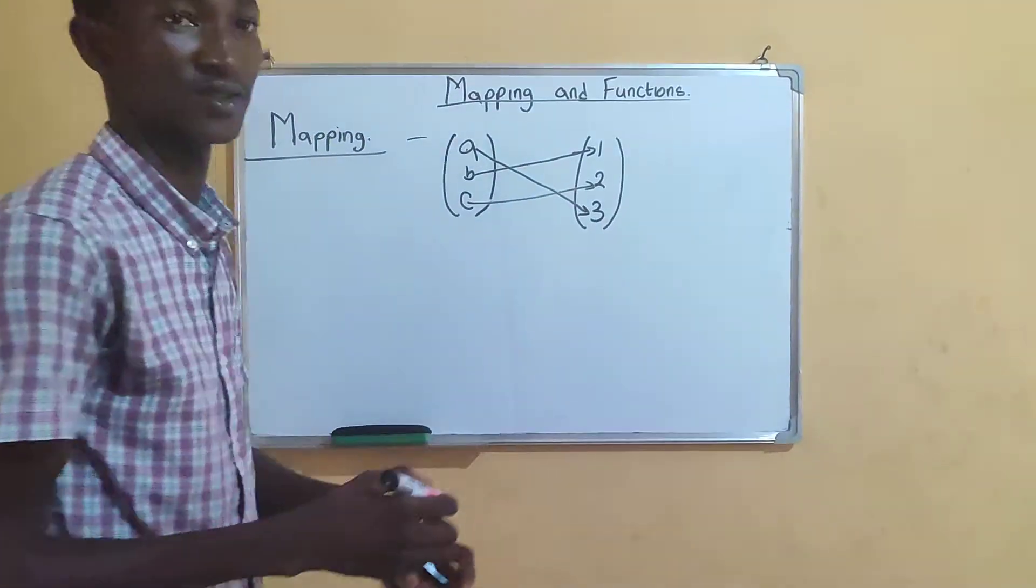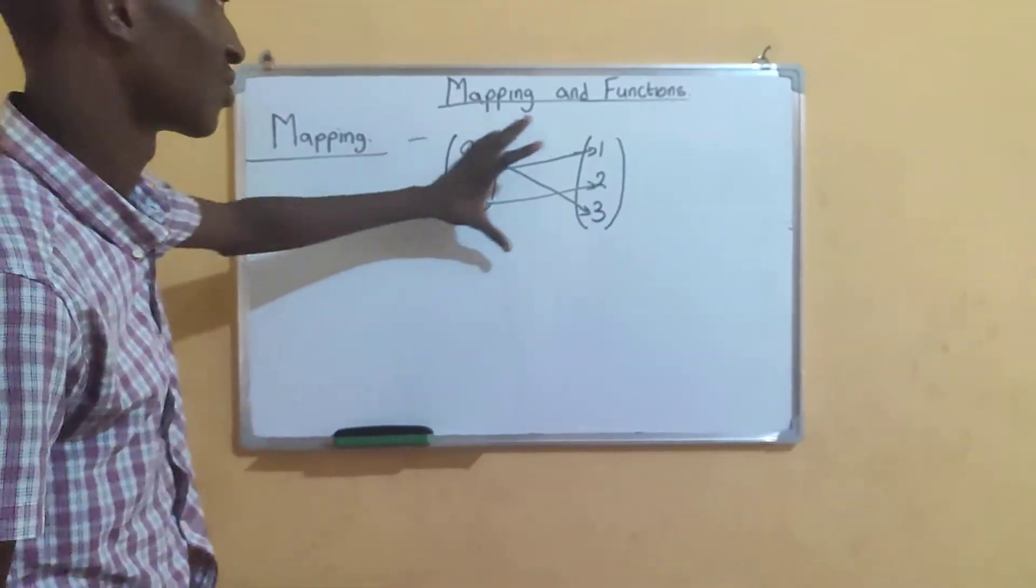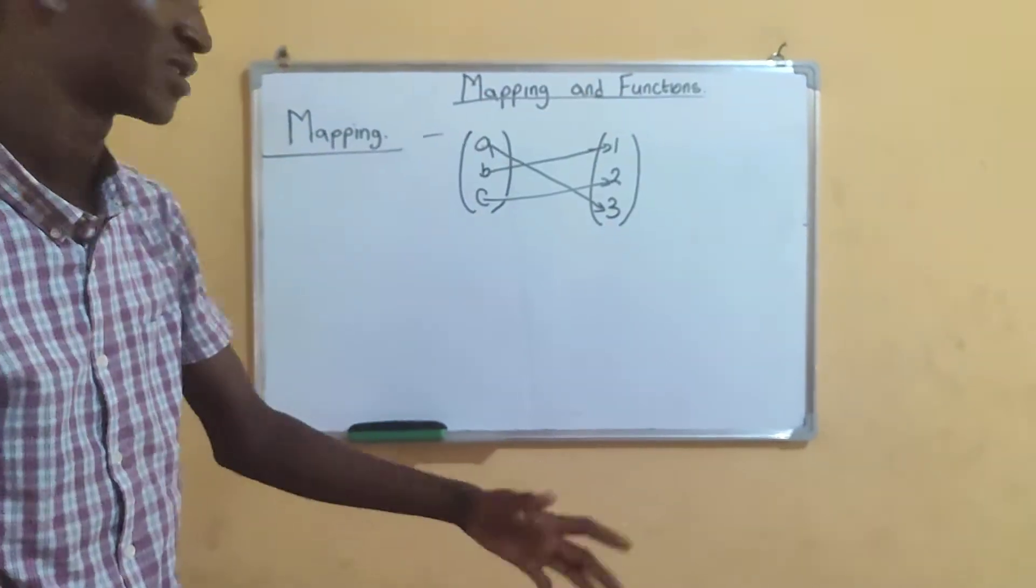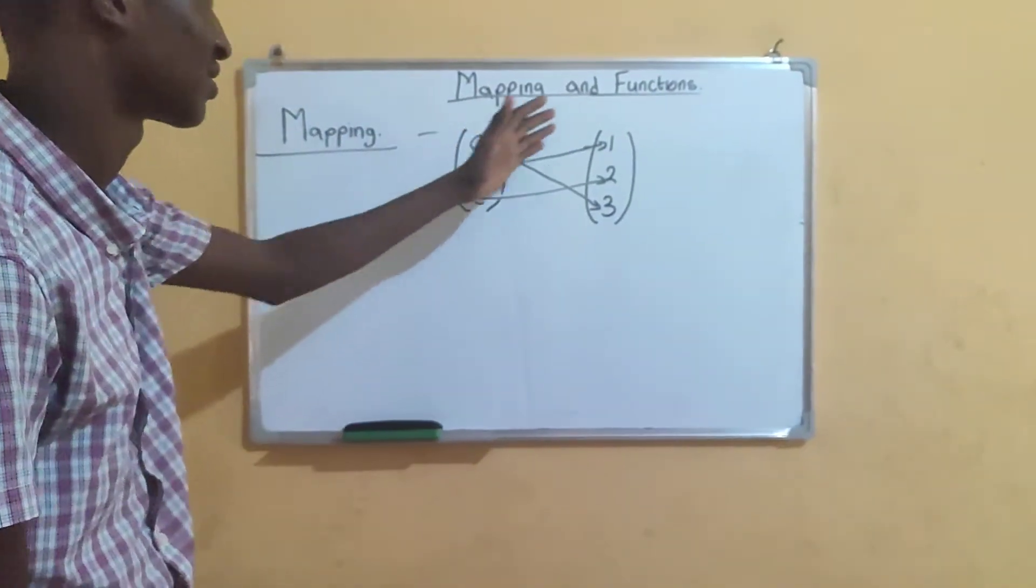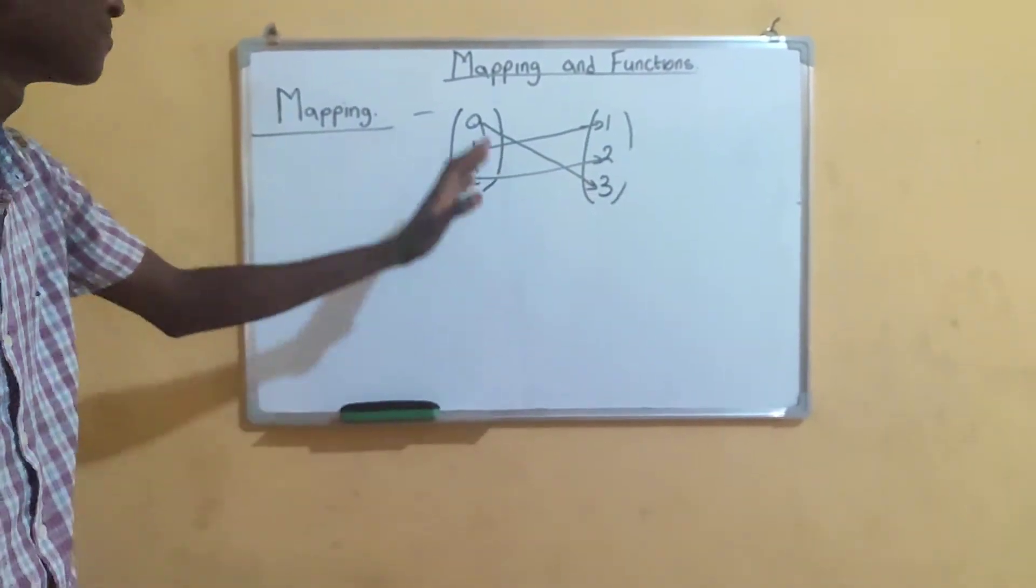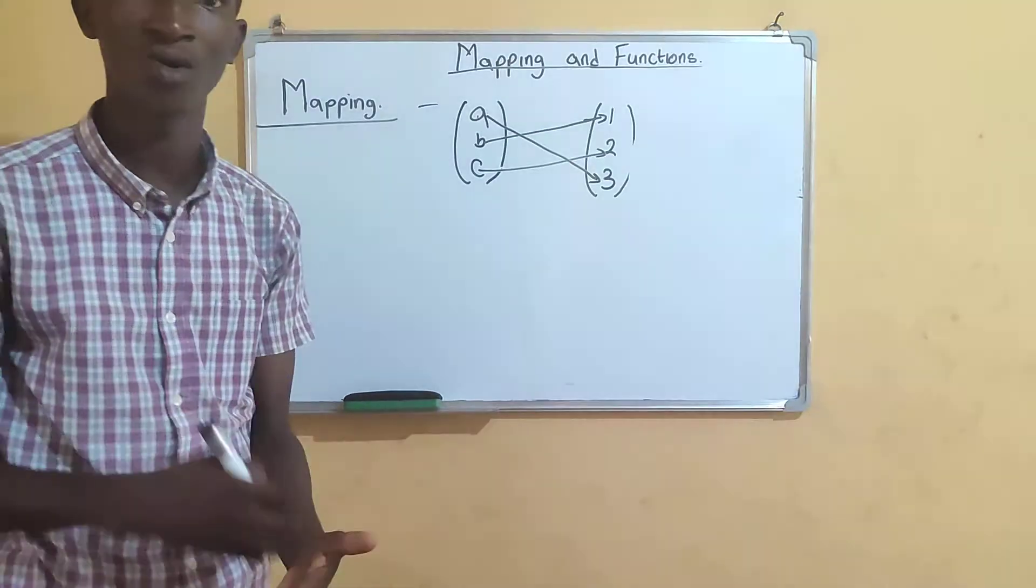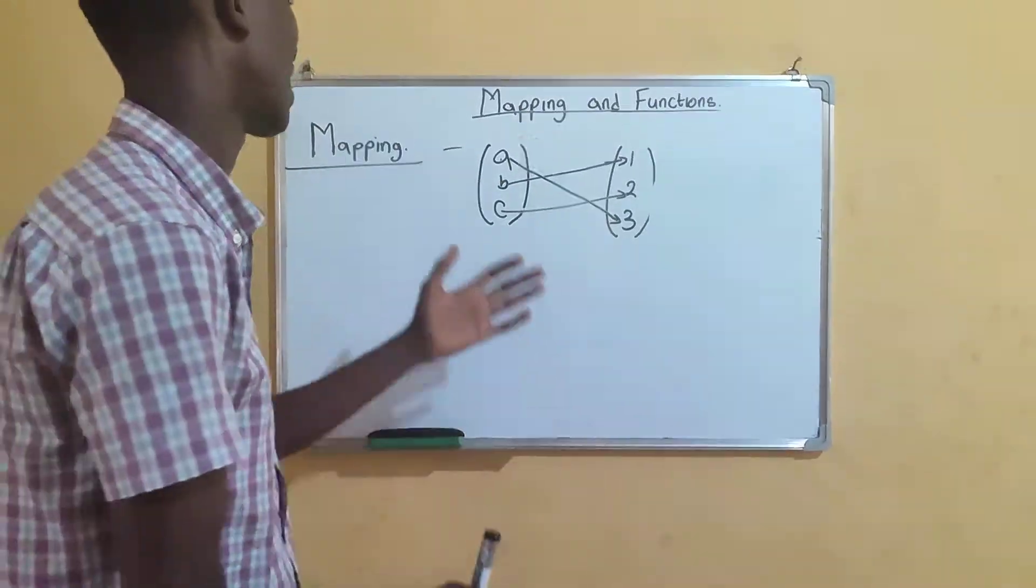This is just for example. This is an arrow diagram. The entirety is an arrow diagram. These are the domains on this side, then these are the code domains. The domains are also called the pre-images, and the code domains are called the images.